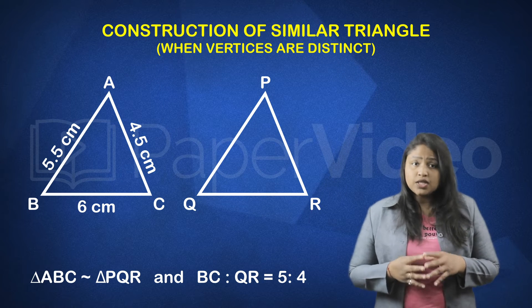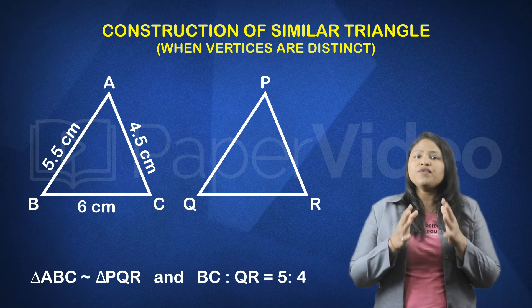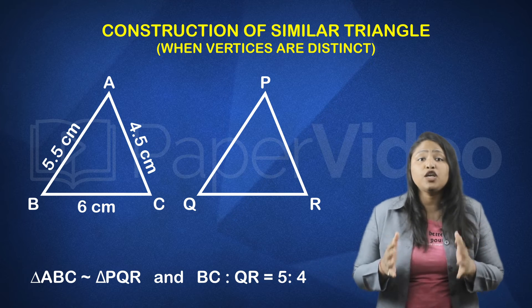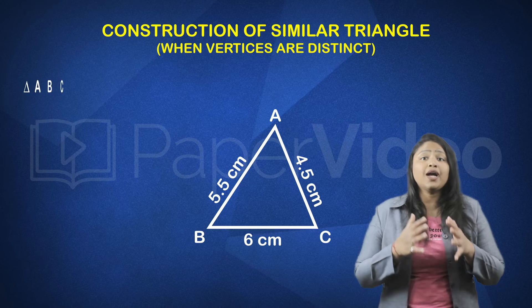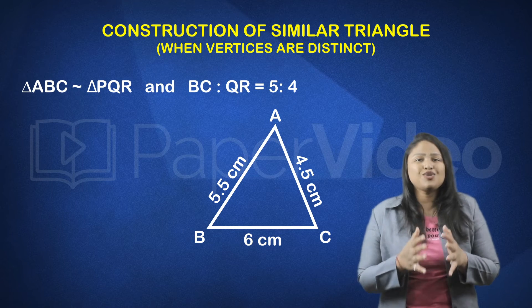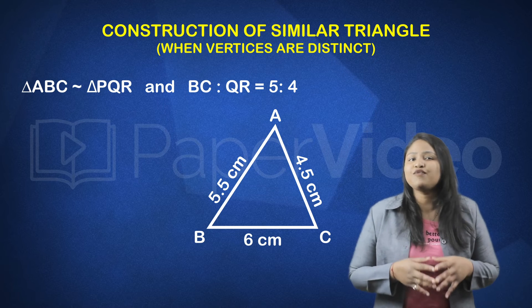In order to construct triangle PQR we must know its dimensions. So we will first find the dimension of the triangle PQR. We have to construct a triangle PQR such that triangle ABC is similar to triangle PQR and BC is to QR equals to 5 is to 4.